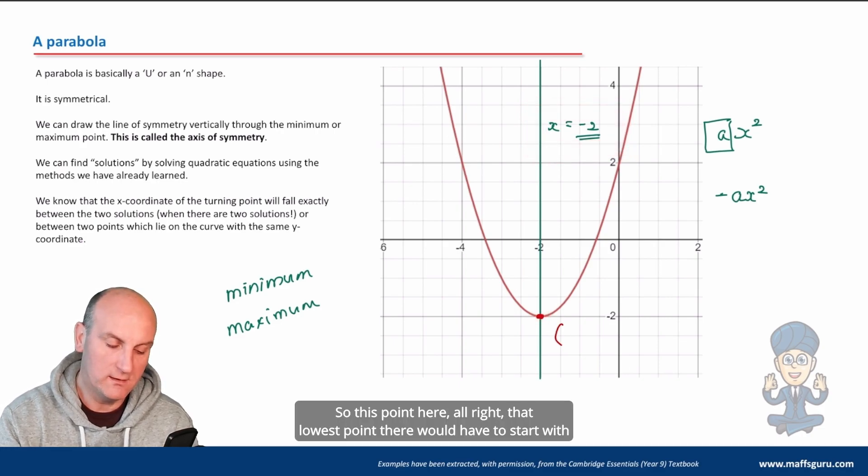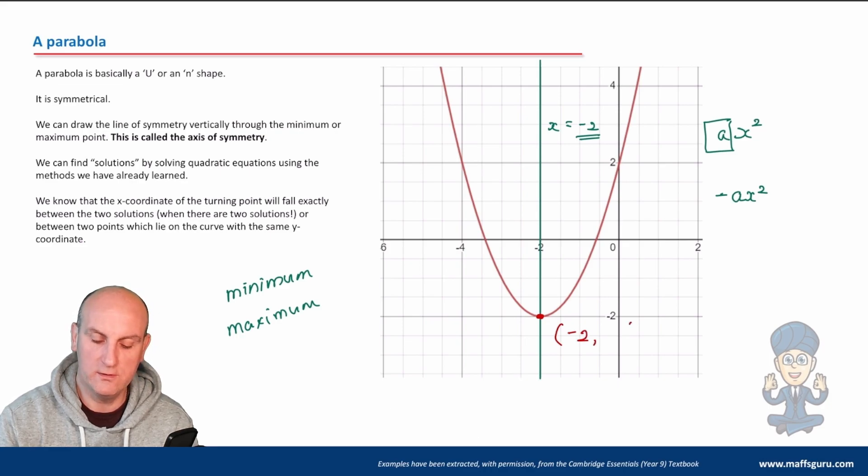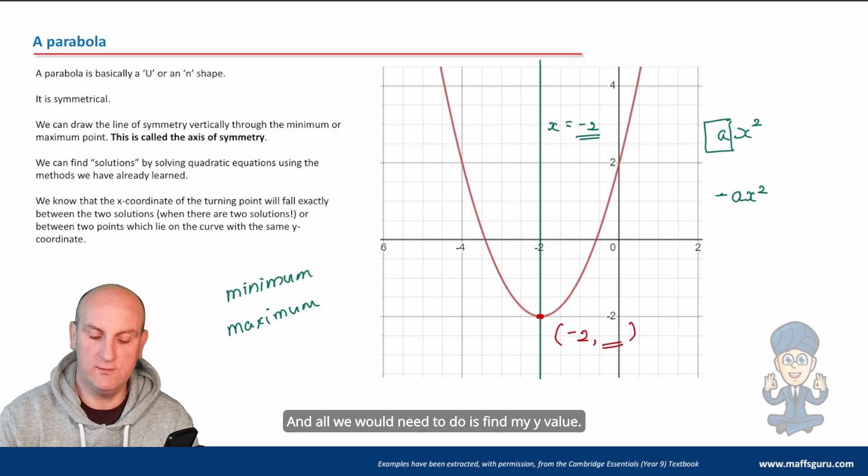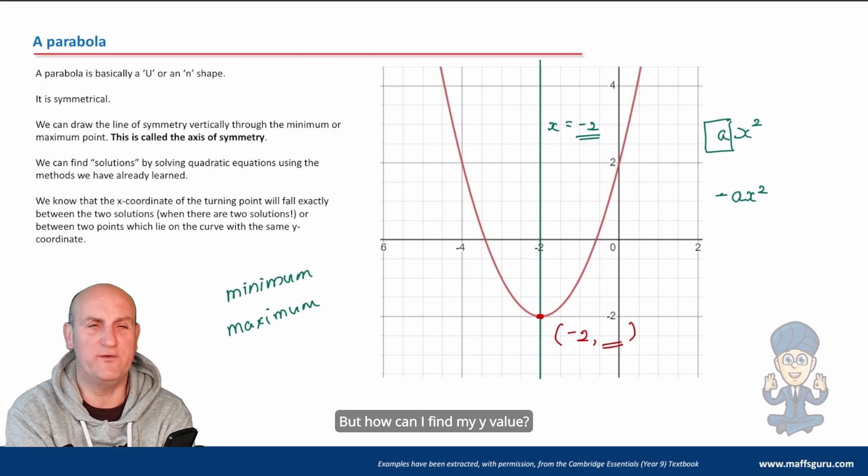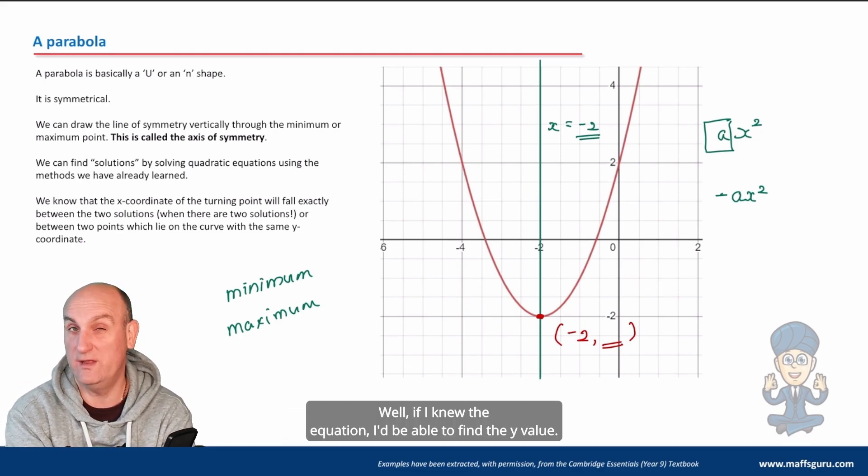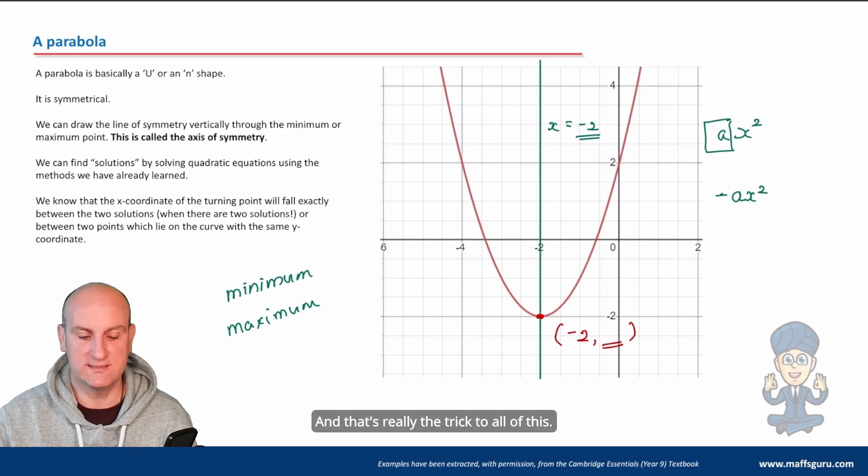This point here, that lowest point there, would have to start with negative two and all we would need to do is find my y value. But how can I find my y value? Well if I knew the equation I'd be able to find the y value and that's really the trick to all of this.